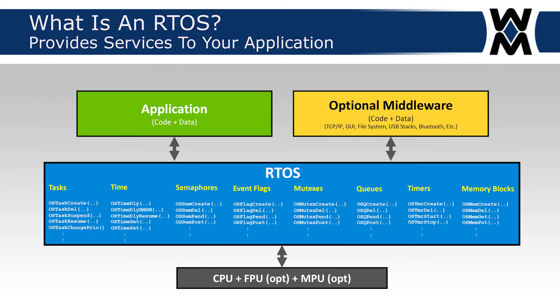Your application code invokes services from the RTOS — services that have to do with task management, time management, messages, memory blocks, and so on. Optionally, other middleware components like TCP/IP, GUI, and file system all typically request services from the RTOS to schedule themselves to run on the CPU.